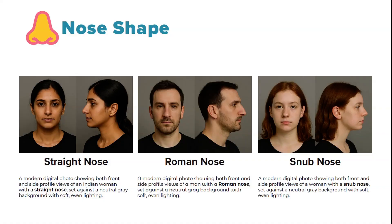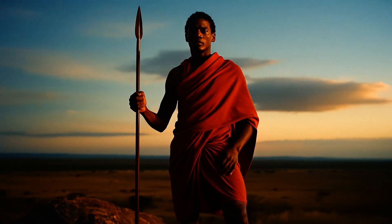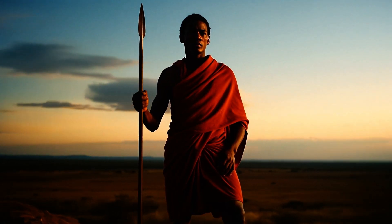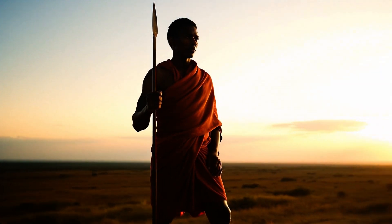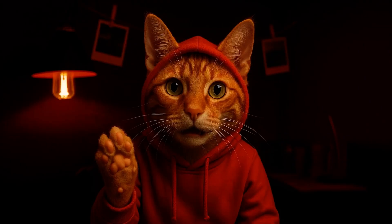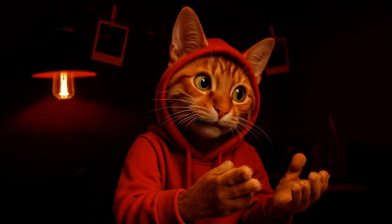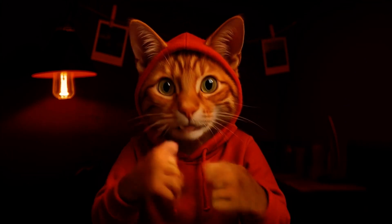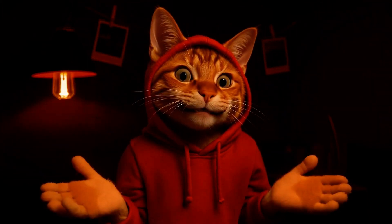And when you stack features — not just blue eyes, but almond-shaped, deep-set, hooded with thick lashes — that's when ChatGPT starts generating real characters. That's what this book became: not just a list of prompts, but a reference system. You learn the structure, you remix, you get what you actually want. And finally, I broke the same-face loop. Every new face — unique, custom, controlled.